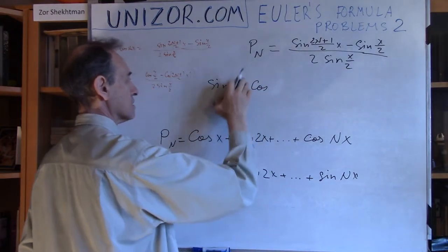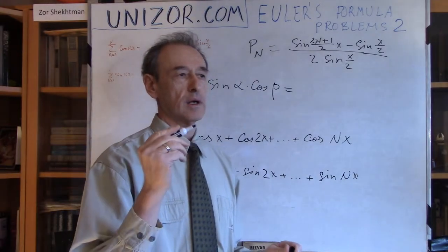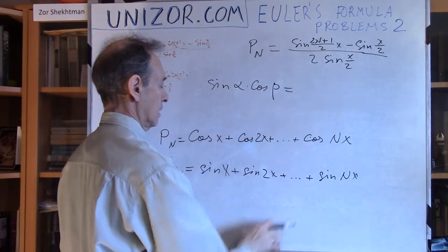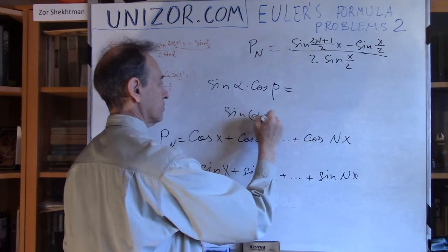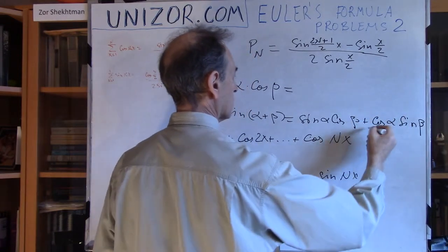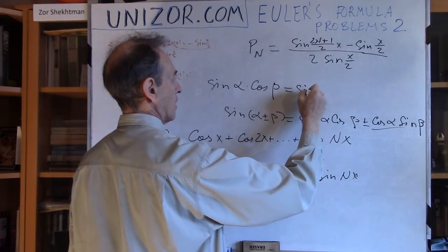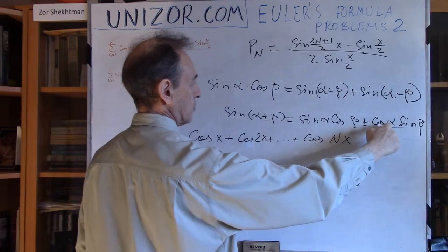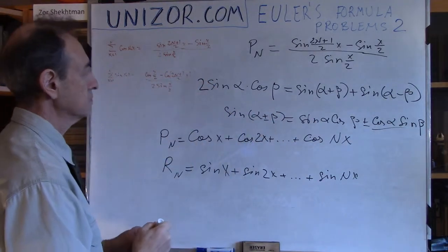Let's use Greek letters since we are talking about angles: sine α · cosine β. Sine(α+β) equals sine α · cosine β + cosine α · sine β. And if I subtract sine(α−β) from sine(α+β), the cosine α · sine β terms cancel, leaving 2·sine α · cosine β. So: 2·sine α · cosine β = sine(α+β) + sine(α−β). I will use this formula and multiply the sum Pn by 2·sine(x/2), with α = x/2 and β = x, 2x, etc.